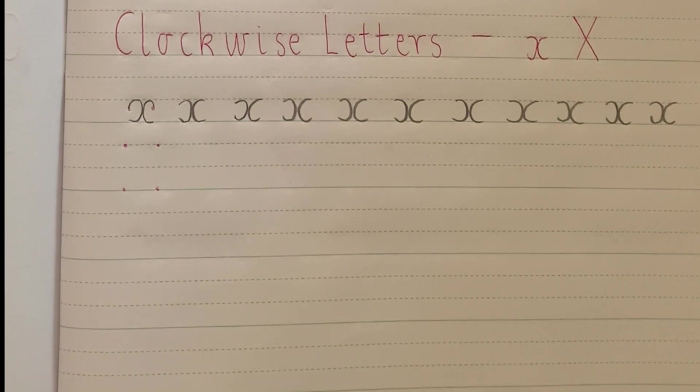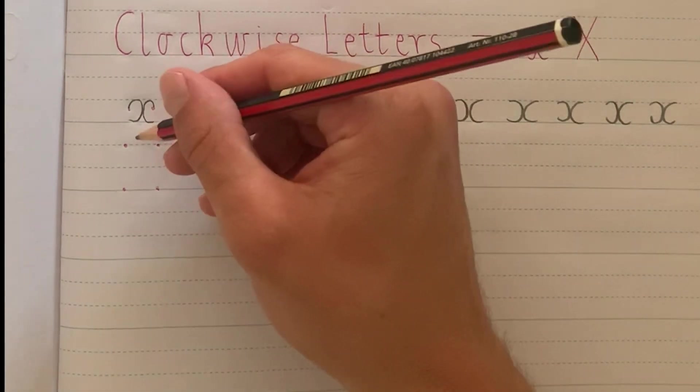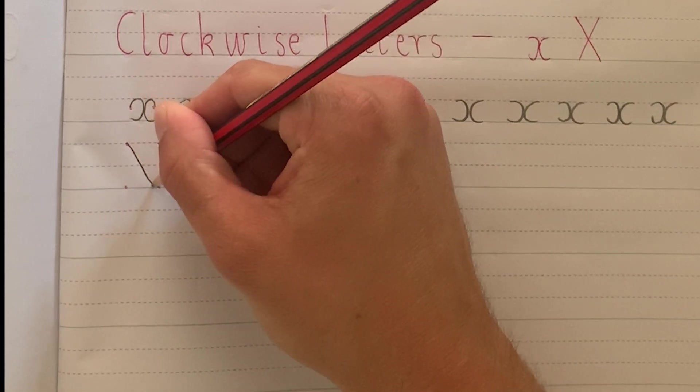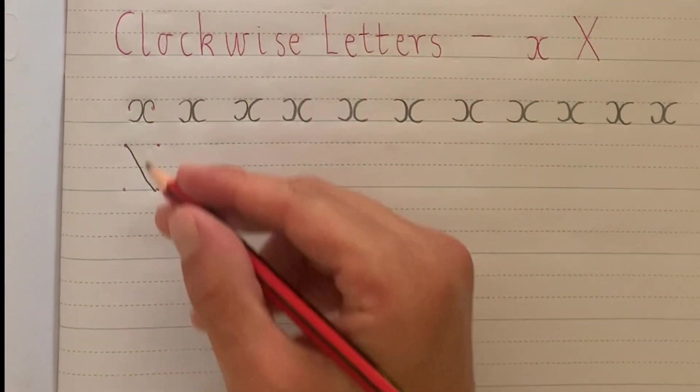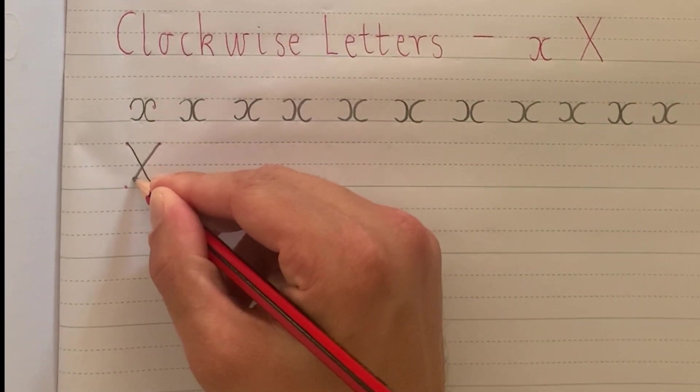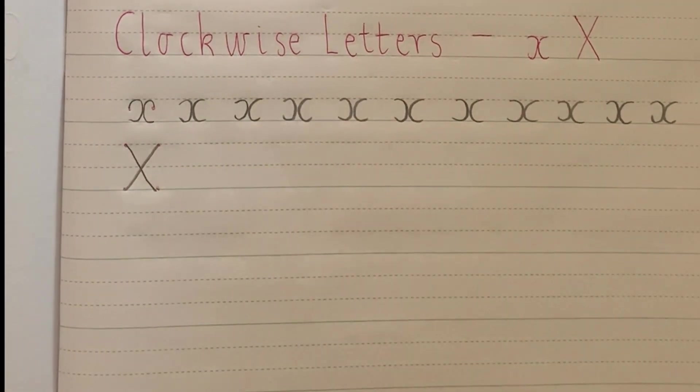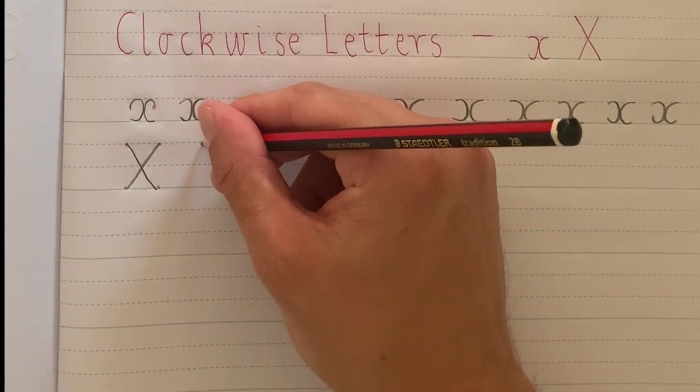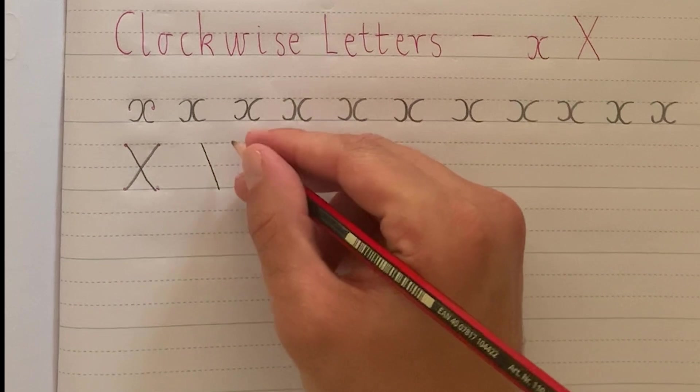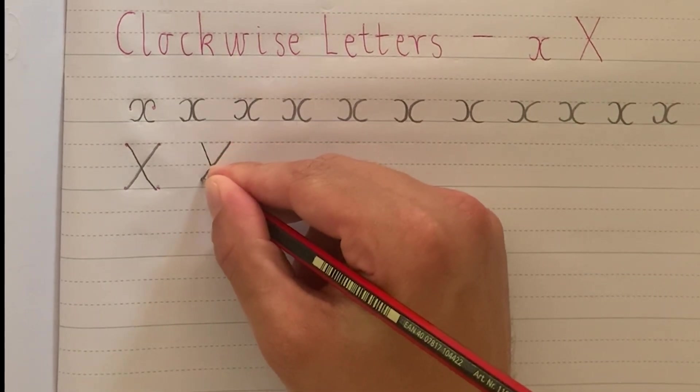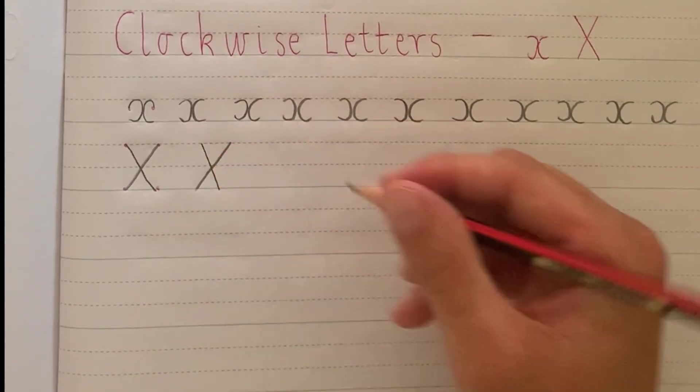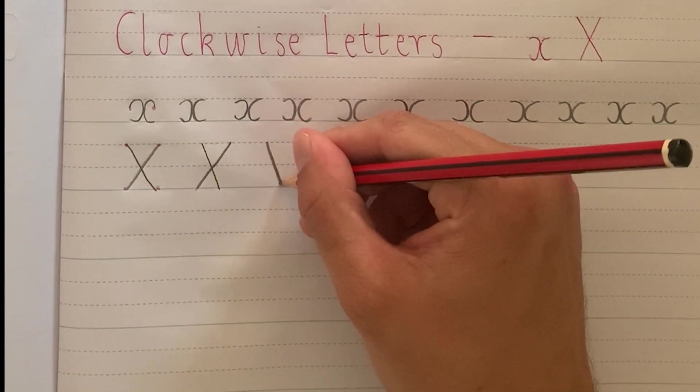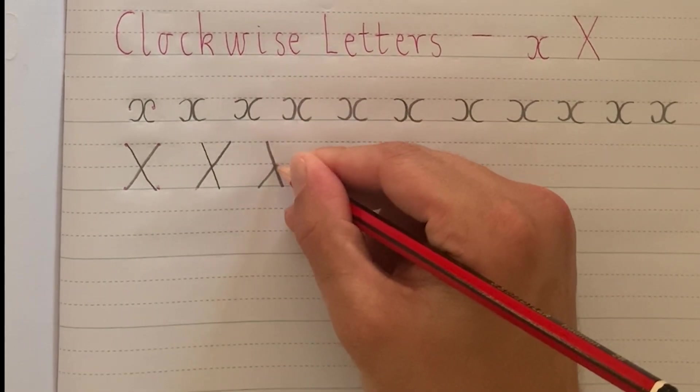Now we're going to have a look at the capital X. So the capital X starts up here and it's a diagonal line across and then a second diagonal line across. X marks the spot. Start again at the top, diagonal line across and diagonal line across. Should intersect in the middle here of that dotted third, if you're getting it absolutely right.